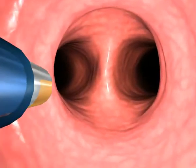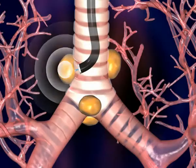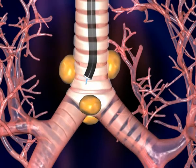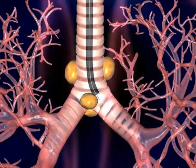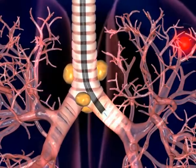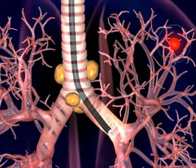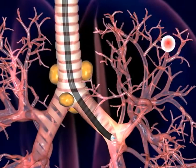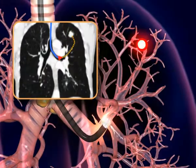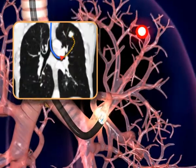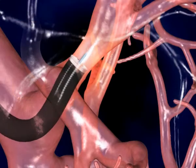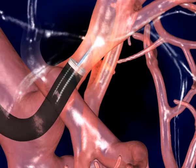To access peripheral lesions, electromagnetic guidance is achieved through a sensor incorporated into the distal tip of the steerable navigation catheter. Together with the iNReach guide catheter or extended working channel, the catheters are inserted into the bronchoscope's own working channel.